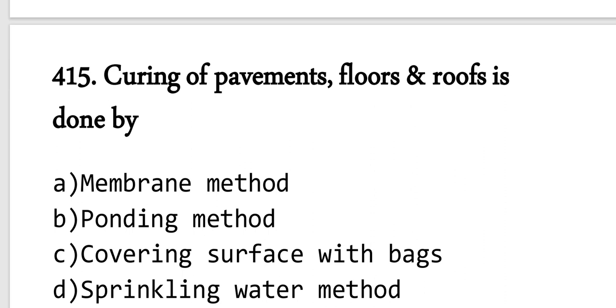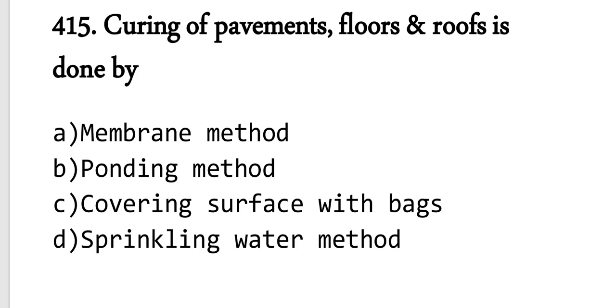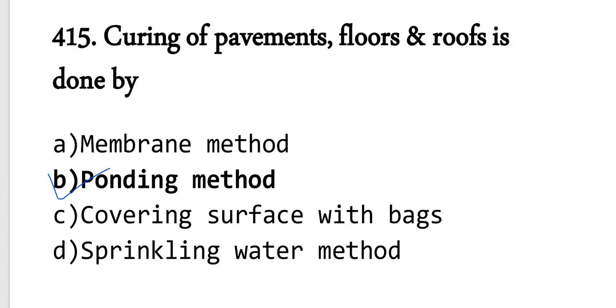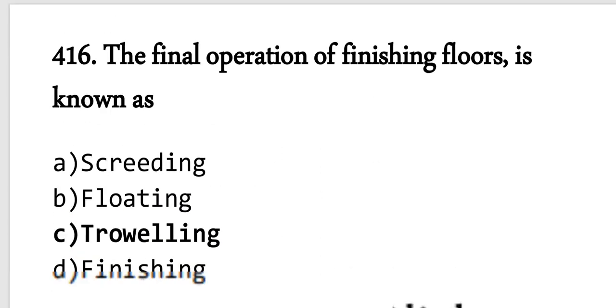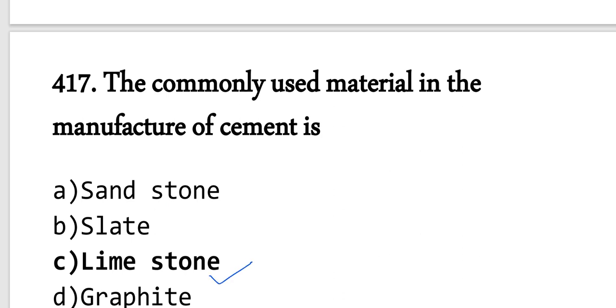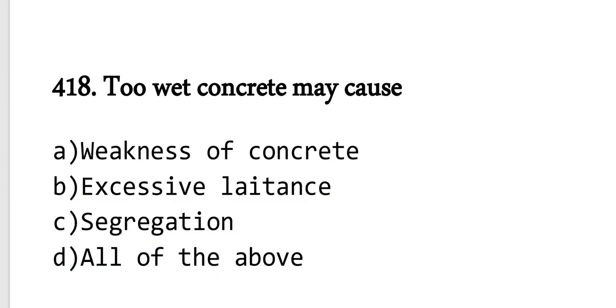Question 416: The final operation of finishing floors is known as troweling. Options are screening, floating, troweling, and finishing. Troweling is the correct answer as the final operation. Question 417: Commonly used material in the manufacture of cement. The main parameter is limestone and clay used for cement manufacture.